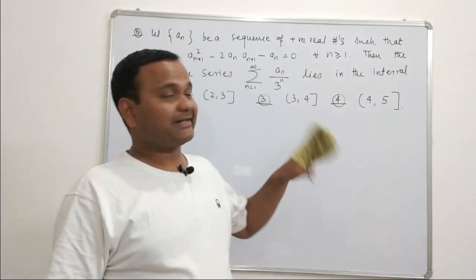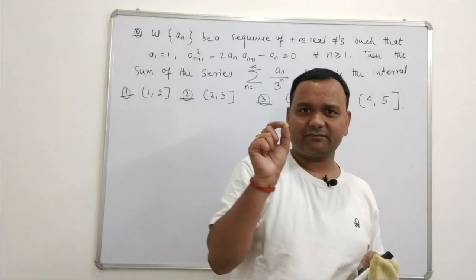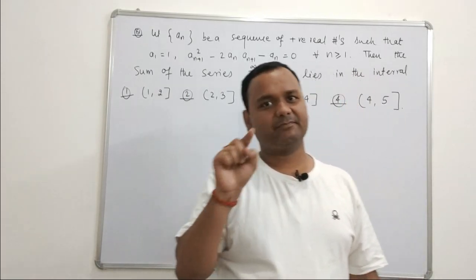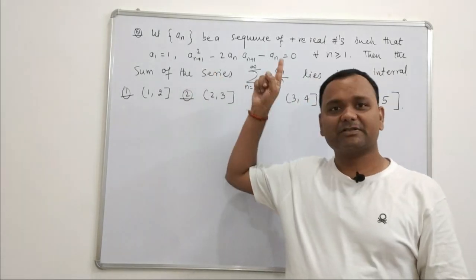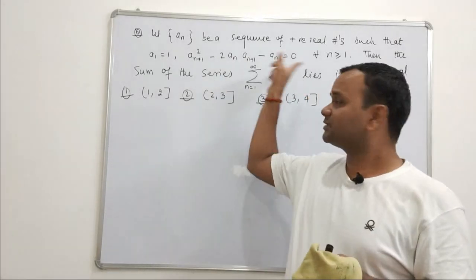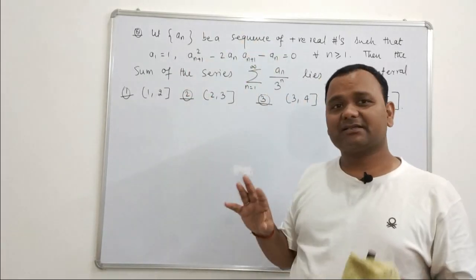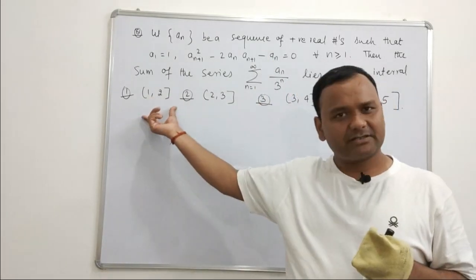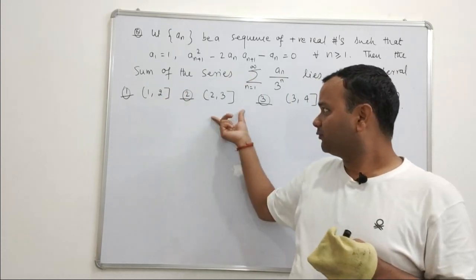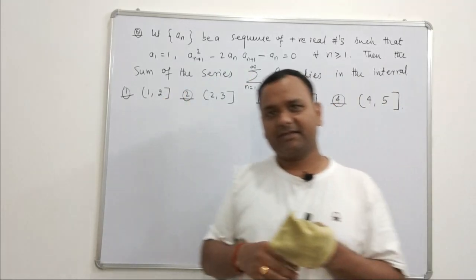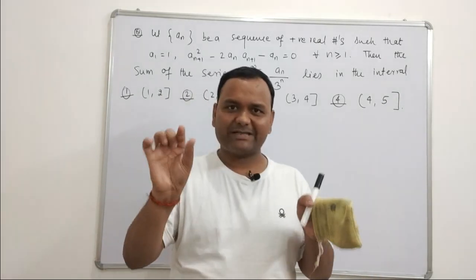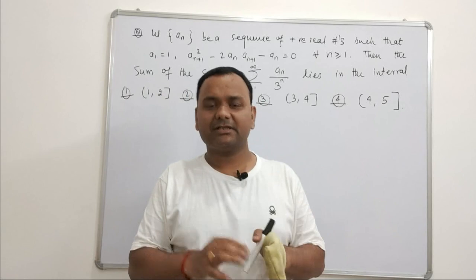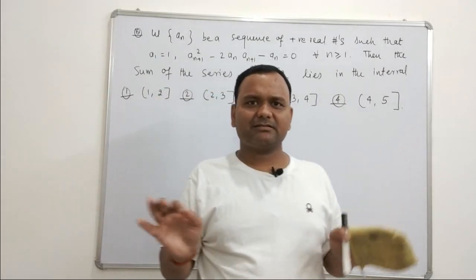Look at this question first — what it is actually saying and how one should proceed. You have a sequence of positive real numbers defined recursively: a₁, a₂, and so forth. There is a relation between aₙ₊₁ and aₙ given by aₙ₊₁² − 2·aₙ·aₙ₊₁ − aₙ = 0. From there, they are asking the estimate of the series Σ aₙ/3ⁿ — what interval does this series value lie in? There are 4 options given. The series is convergent, but they are asking for the estimate of its value.